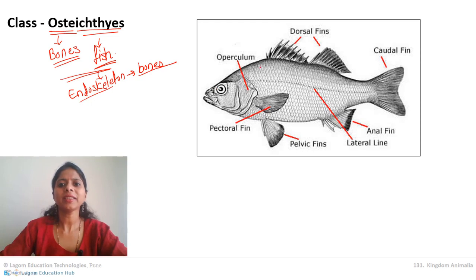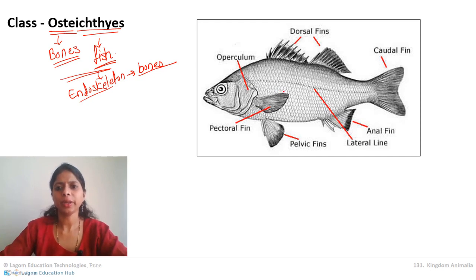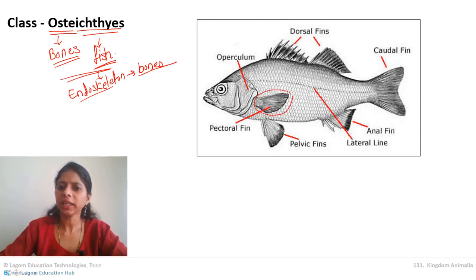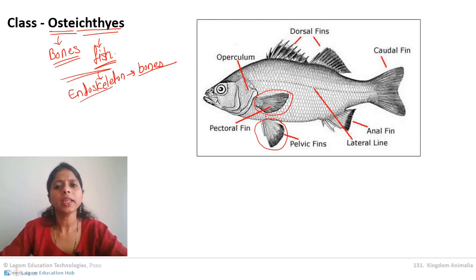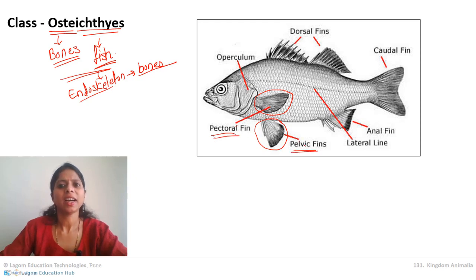Looking at a typical diagram of a bony fish, the main characteristic is the presence of fins. Near the head is the pectoral fin, which is paired — one on the left and one on the right. There is also a pair of pelvic fins, located somewhat near the head region rather than the tail region.